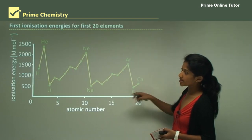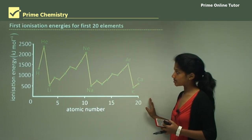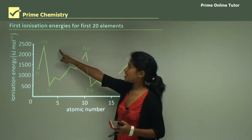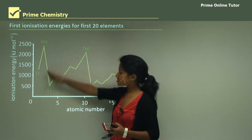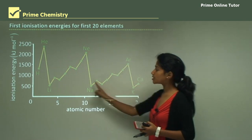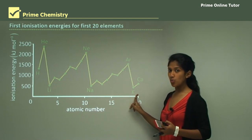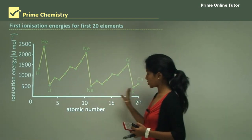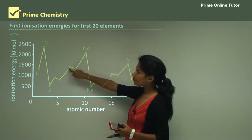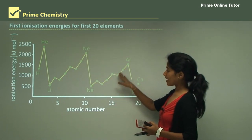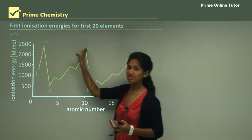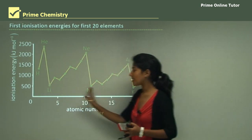Looking at a graph of the first 20 elements, we can see peaks at the noble gases — helium, neon, and argon. After each peak it dips down very low, because those elements are Group 1 elements with very low ionization energies. Then the values rise again without a defined pattern, with some decreasing and some increasing at random points, but noble gases are clearly at the top and Group 1 elements at the bottom.